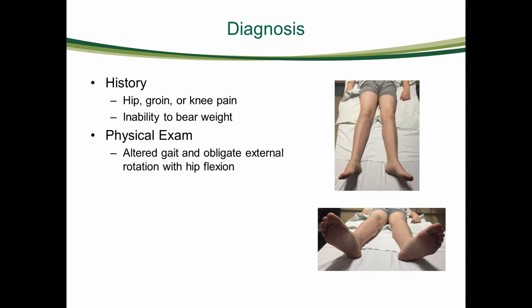SCFE should be included in the differential of any 10-15 year old presenting with hip, groin, or knee pain. The history should elucidate the chronicity and stability of the slip. If a patient is outside the expected age range, consider whether the patient has systemic disorders such as endocrinopathies that would contribute. On physical exam, the patient's gait is assessed to determine if a limp or an external foot progression angle is present.